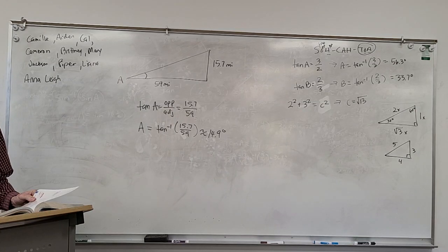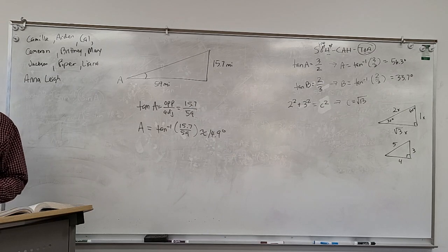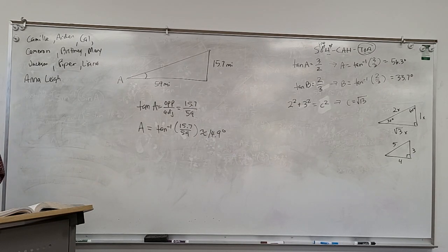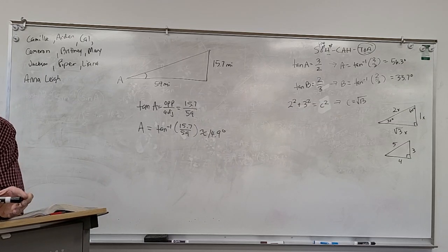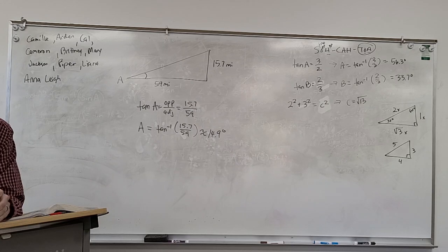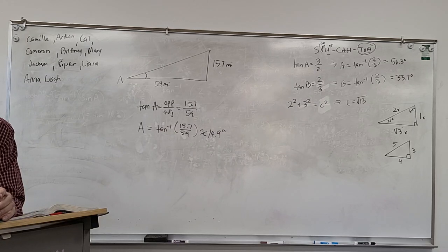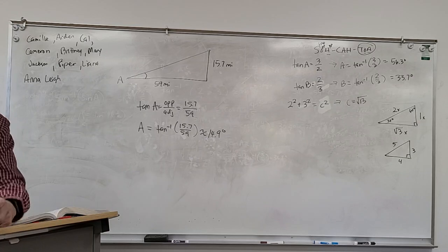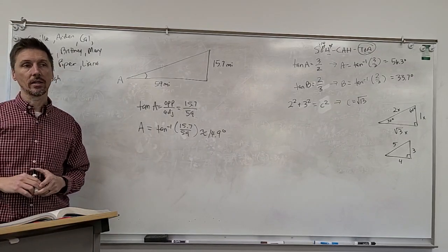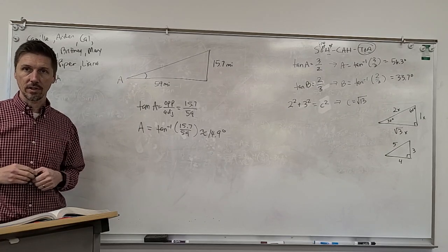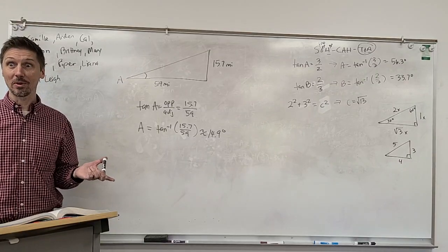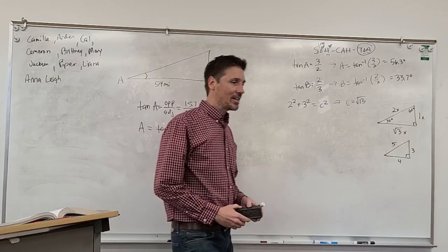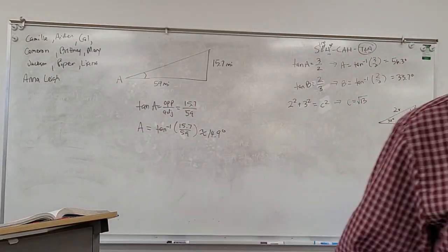I think you guys got that. Any questions on how to use the inverse trig function? Something I noticed while doing the homework: whenever you find the sine, cosine, and tangent of both angles A and B, the sine of B and the cosine of A are the same, and the sine of A and the cosine of B are the same, and the tangents are always just the inverse of each other. Yep, that will always happen in a right triangle — the sine of one angle will always be the cosine of the other angle, and vice versa.